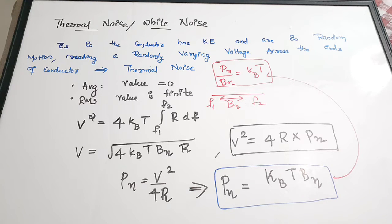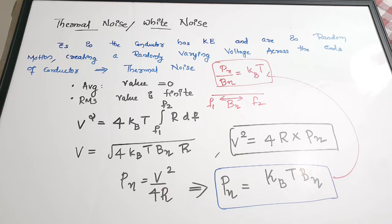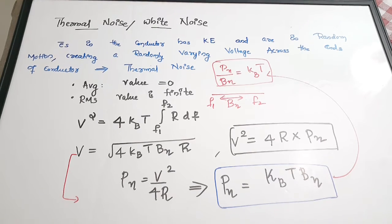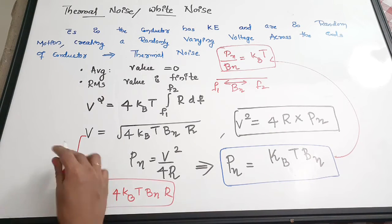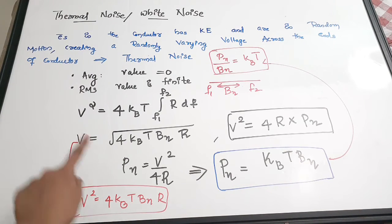So we have studied three important equations: the RMS noise voltage V = √(4·KB·T·BN·R), the noise power PN = KB·T·BN, and V² = 4·KB·T·BN·R, where KB is Boltzmann's constant, T is temperature, BN is bandwidth, and R is resistance.